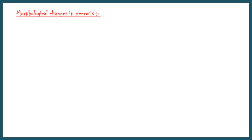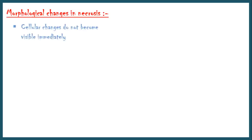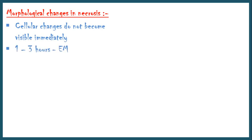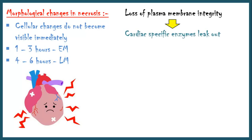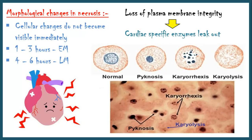In necrosis, cellular changes after cell death do not become visible immediately. It takes about 1 to 3 hours to see the earliest changes visible by the electron microscope, and 4 to 6 hours by the light microscope. Therefore, in a patient who had died from a myocardial infarction, the cellular changes after myocardial cell death do not become visible immediately. However, as the cellular contents leak out in necrosis, cardiac-specific enzymes may be present in the blood within 1 hour after the infarction.